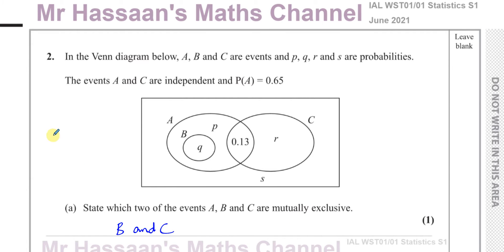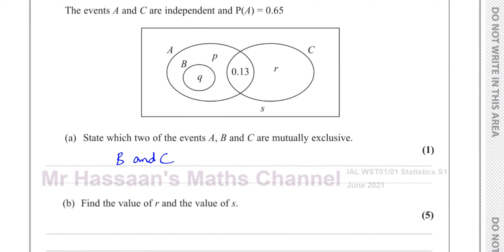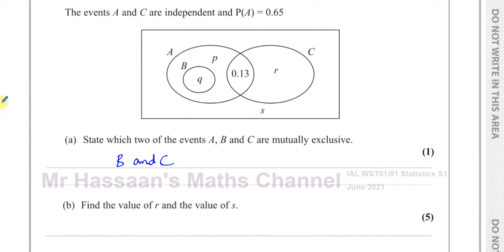So B and C are the two mutually exclusive events. That's the answer for part a — just state it for one mark.